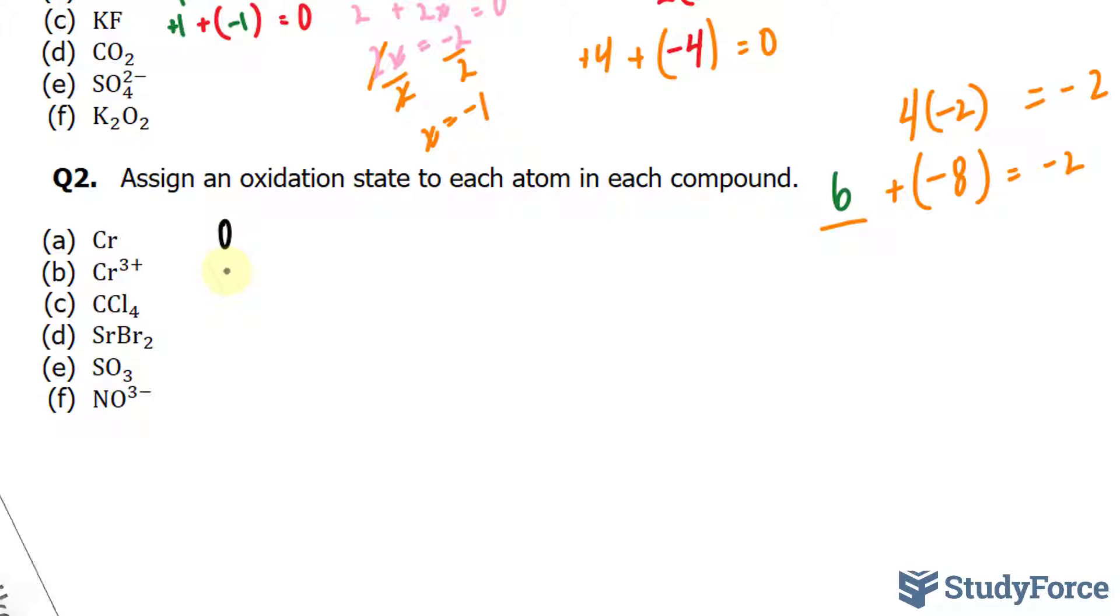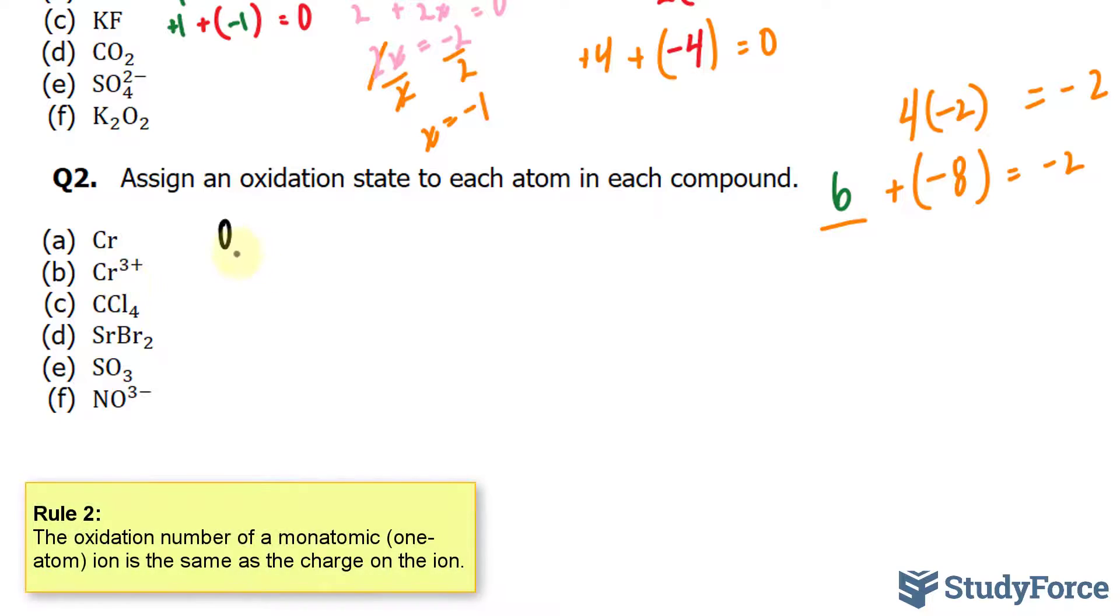Moving on to question B, we have chromium in its ionic state. It has a charge of 3+, and because it has a charge of 3+, it has an oxidation state of 3+.